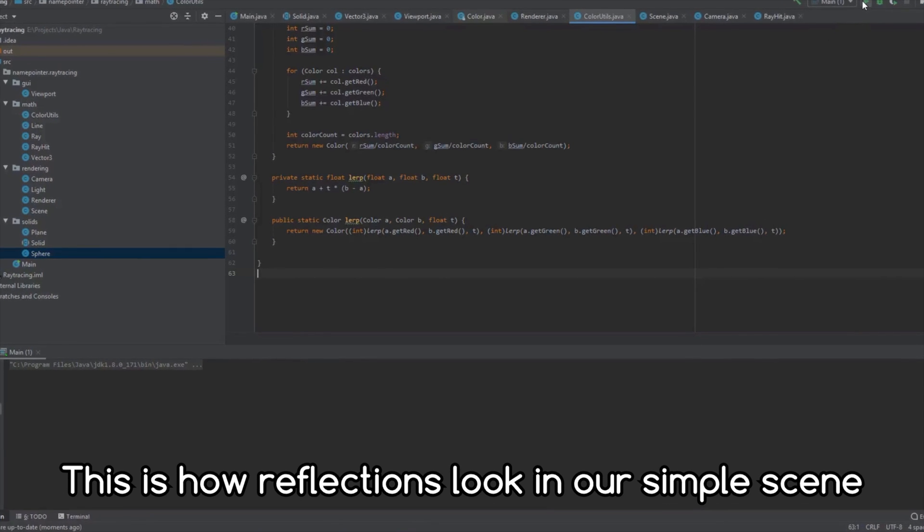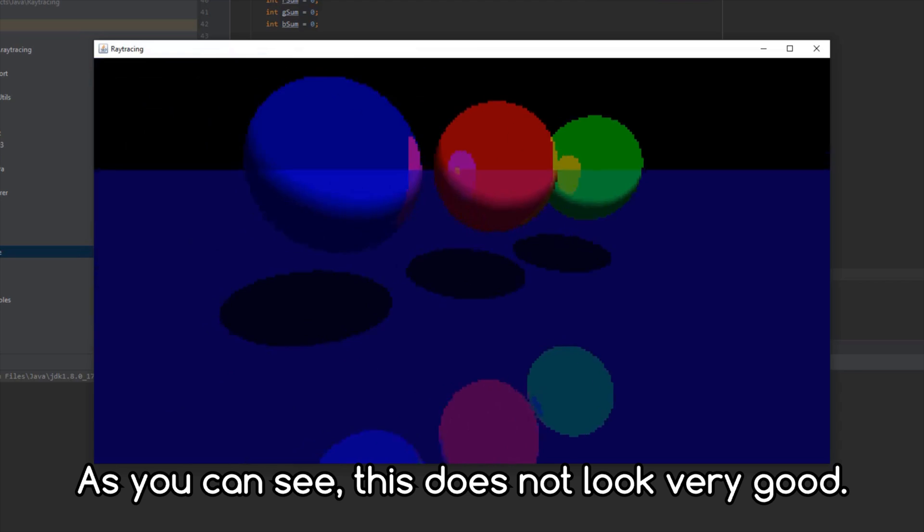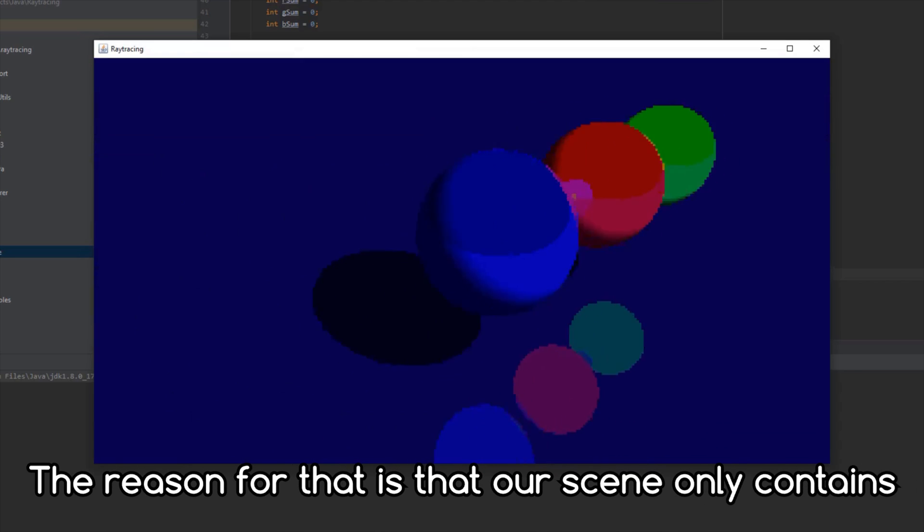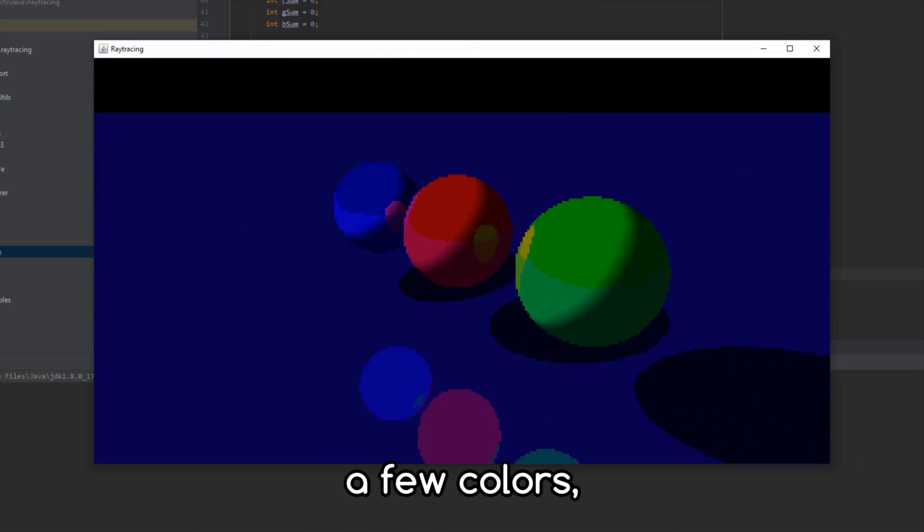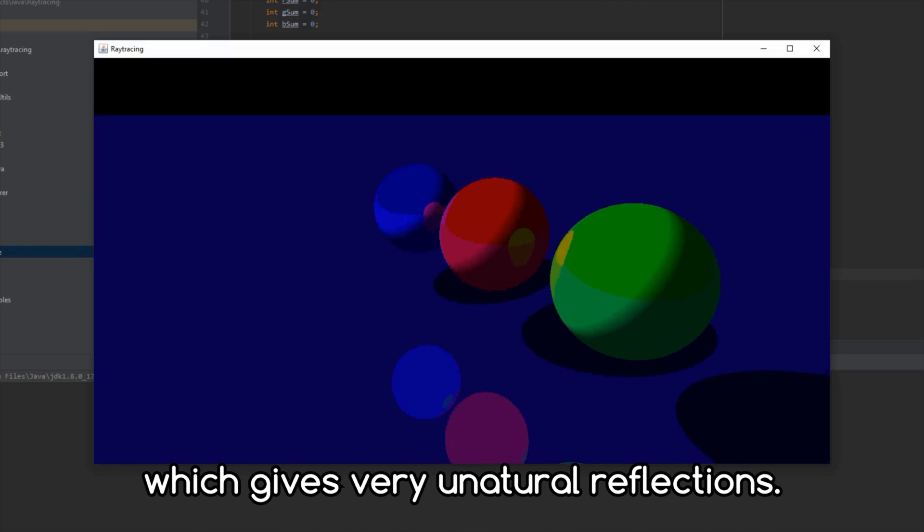This is how reflections look in our simple scene. As you can see, this does not look very good. The reason for that is that our scene only contains a few colors, which gives very unnatural reflections.